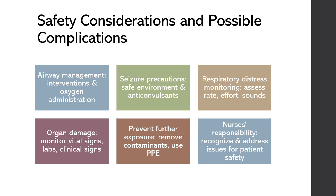So remember, safety considerations and possible complications in poisoning cases include airway management, seizure precautions, respiratory distress monitoring, organ damage, and preventing further exposure to toxins. As nurses, it's our responsibility to be vigilant in recognizing and addressing these issues to ensure the safety and well-being of our patients and ourselves.